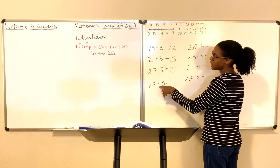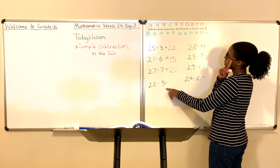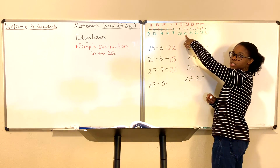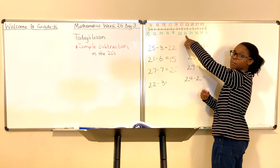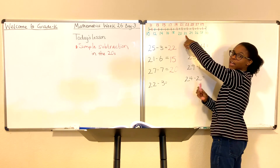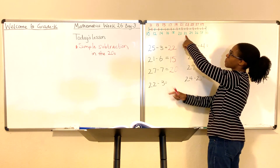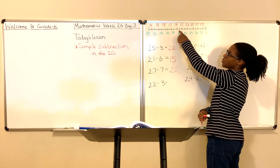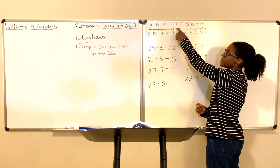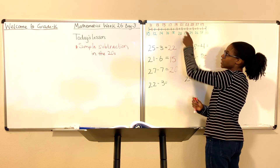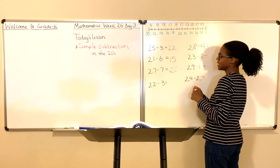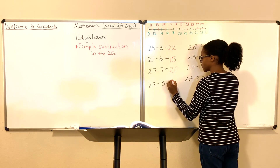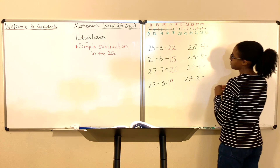22 minus 3. What is 22 minus 3? Come up to the number line, find the number 22, and then count backwards by 3: one, two, three. Good — 22 minus 3 is 19.